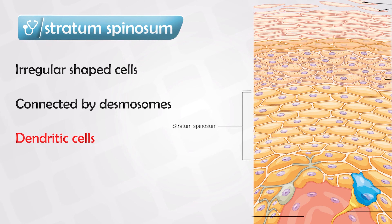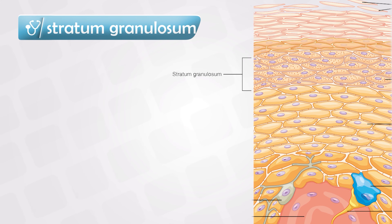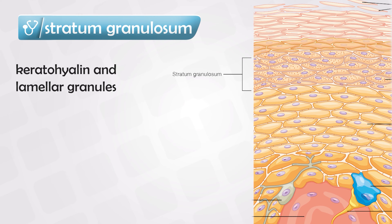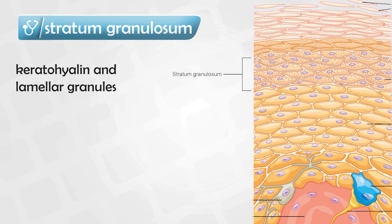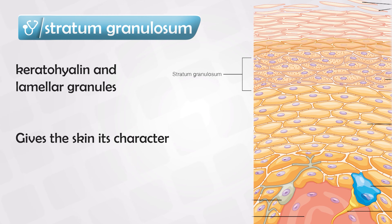This layer has dendritic cells, which are antigen-presenting cells important for immunological reactions. The next layer, stratum granulosum, has two very important granules: the keratohyaline granules and the lamellar granules. The keratohyaline granules contain keratin, a precursor that eventually cross-links and forms bundles, giving the skin a tight and stretched character. The lamellar granules secrete glycolipid that sticks the cells together, working as a glue.